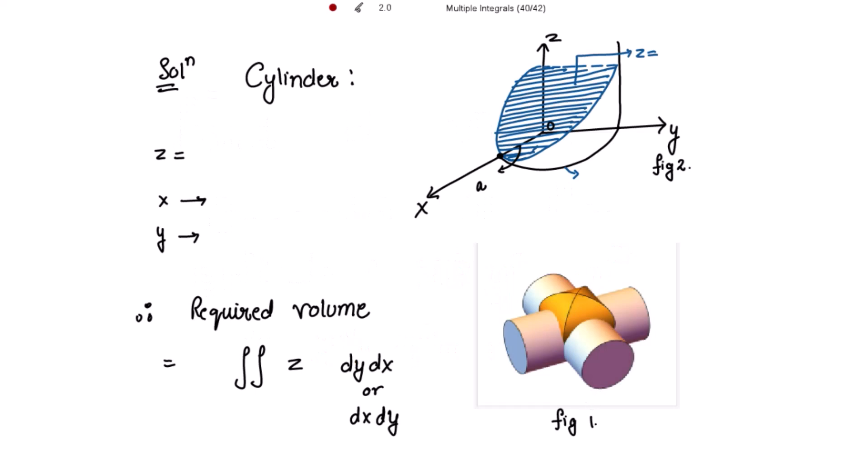If you look at figure 1, there are two cylinders and the volume common to these two cylinders is shown. There are eight equal sections in the volume common to these two cylinders — four above and four on the other side. So the required volume will be eight times the volume in the first quadrant, which is one-eighth of the required volume, shown in figure 2.